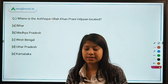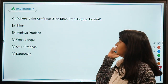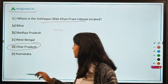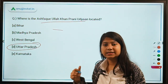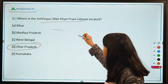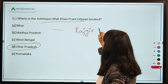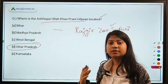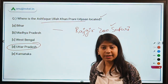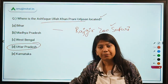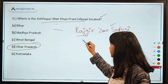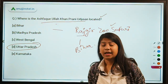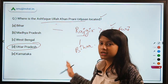Next question: Where is the Ashwa Khullah Khan Prani Udyan located? It is a static question — it is located in Uttar Pradesh. The reason it is in the news is that this zoo, along with Raj Geer Zoo Safari in Bihar, has been given official recognition by the Central Zoo Authority. Remember: Ashwa Khullah Khan Prani Udyan is in Uttar Pradesh and Raj Geer Zoo Safari is in Bihar.